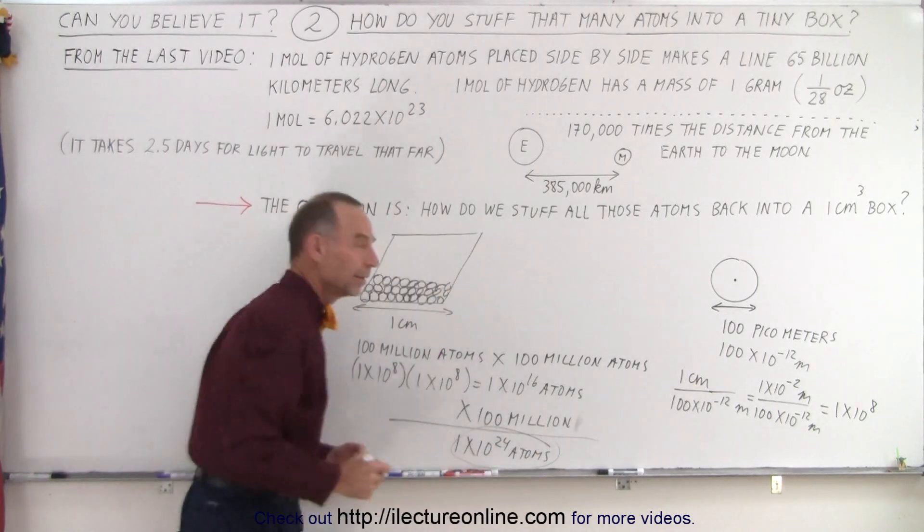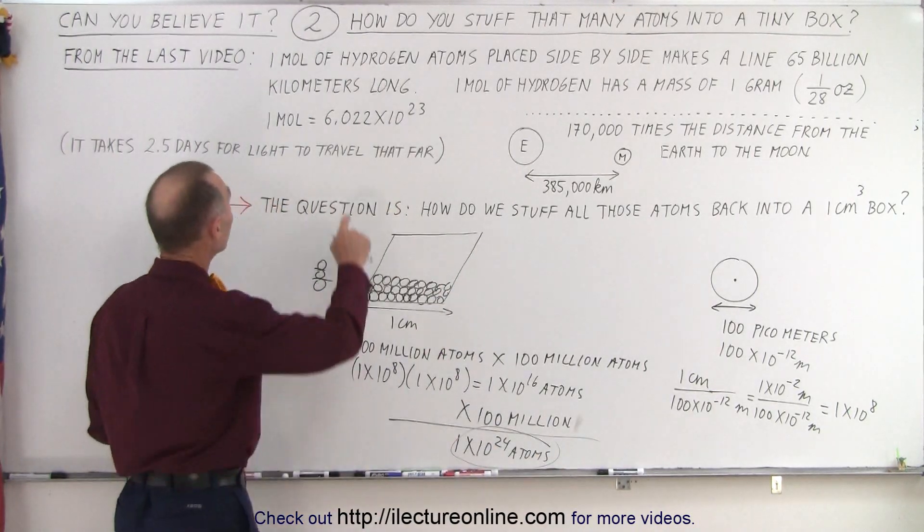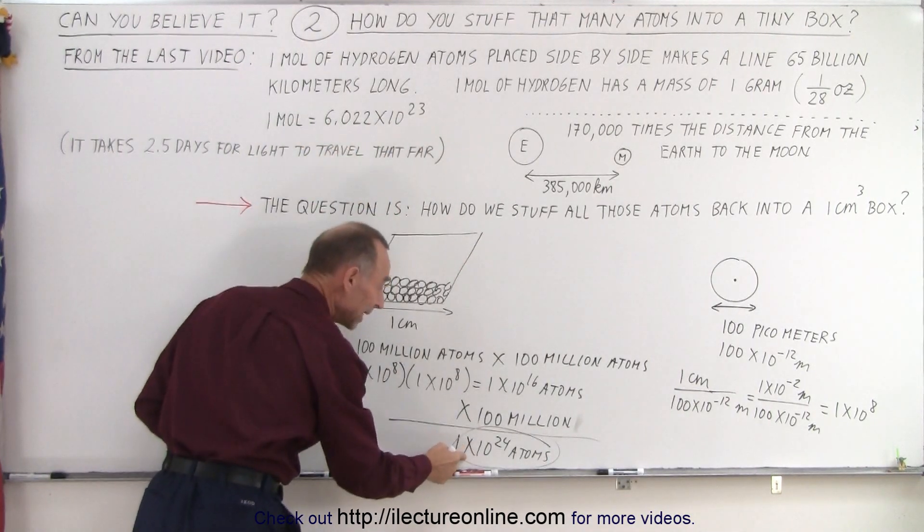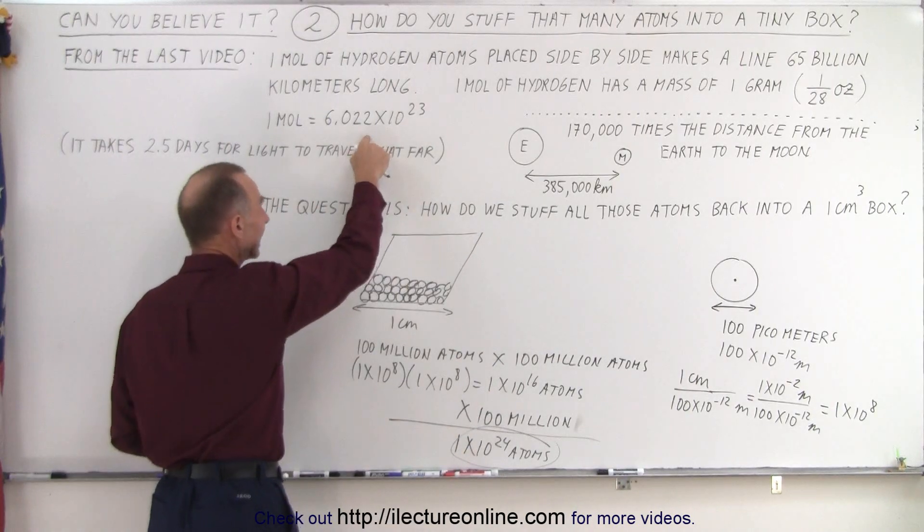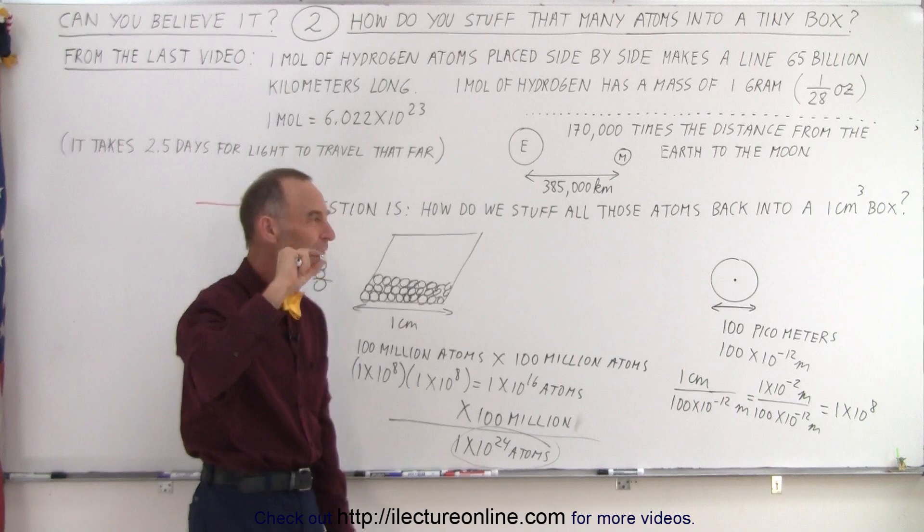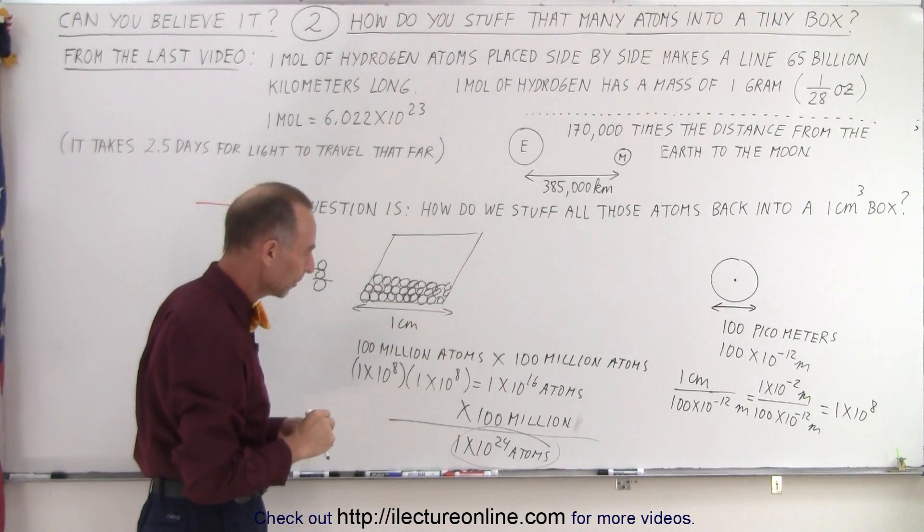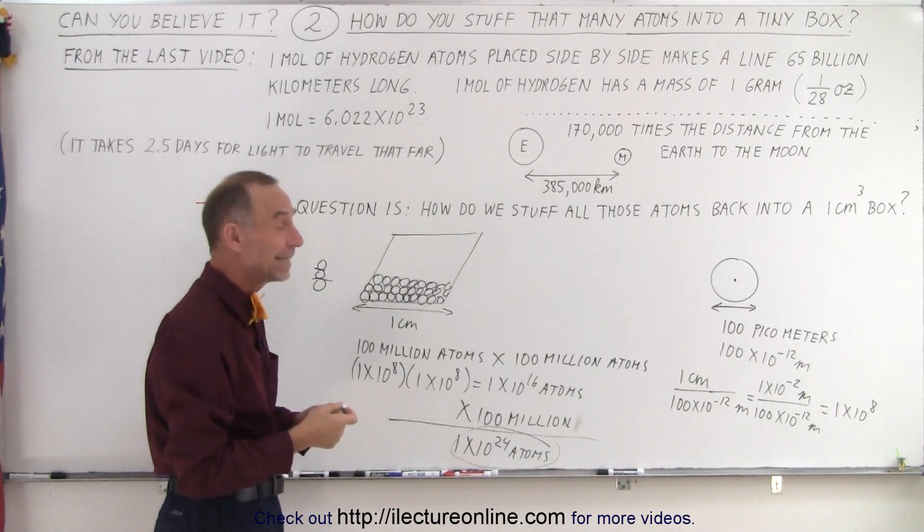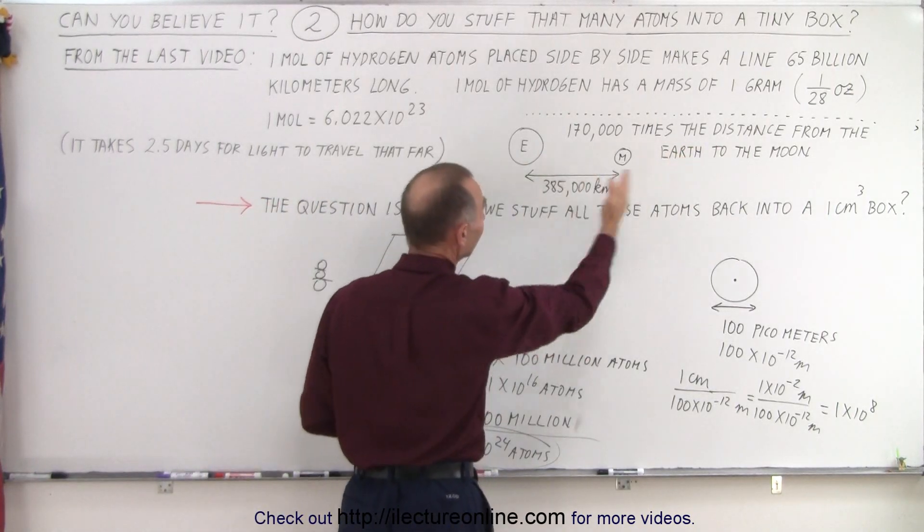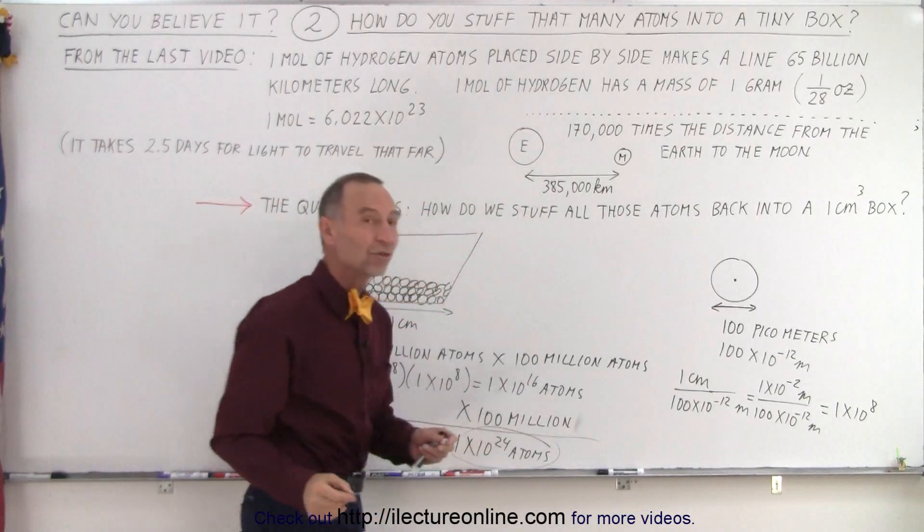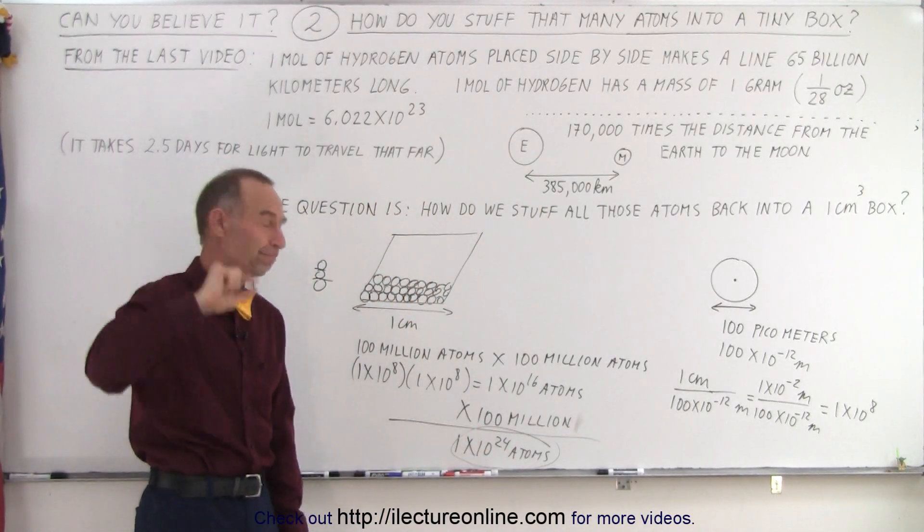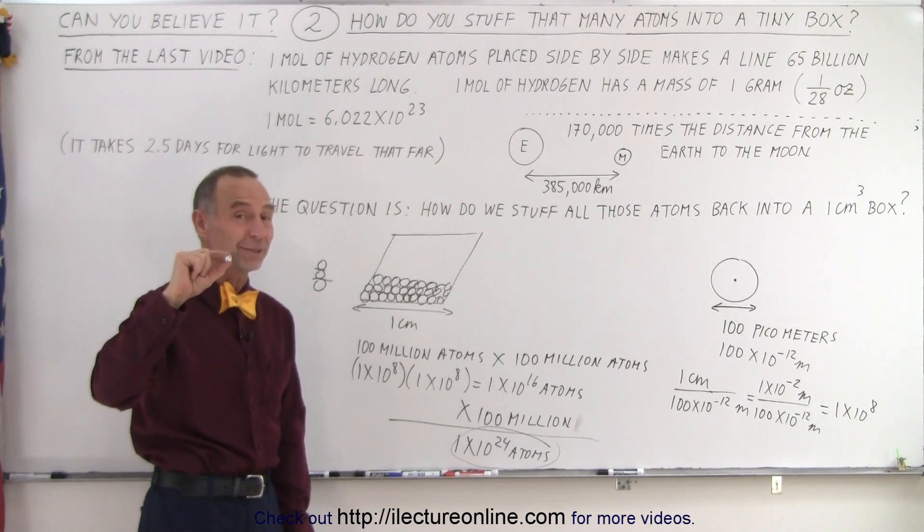Now, that is actually bigger than a mole of atoms, which is only 6×10^23. So you could put this many atoms, which is more than a mole, into a little cube one centimeter in volume. So yes indeed, you can take that enormous line of atoms, lined up 65 billion kilometers long, and stuff all those atoms into this little cube. Can you believe it?